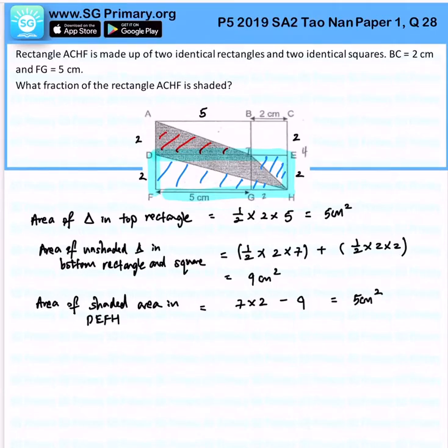So all in all, we realize that my total shaded area is 5 plus 5, which is 10cm².